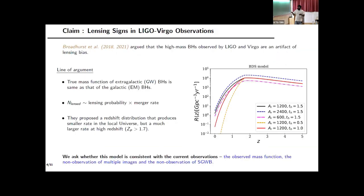There was a series of papers by Broadhurst et al. arguing that the high-mass black holes observed in LIGO-Virgo are an artifact of lensing bias. They claim it is really only 10–15 solar mass black holes merging, and we interpret them as 35–40 solar mass because lensing has amplified the signal. Their argument is that lighter black holes prevail throughout the universe, just as in our galaxy. The number of lensed events depends on lensing probability times the merger rate, and if the merger rate is high, LIGO-Virgo will detect more lensed, apparently massive black holes.